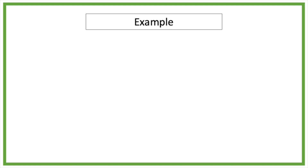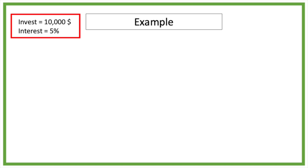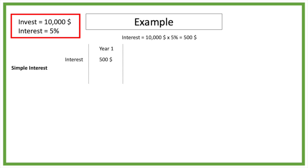Let's say we invest 10,000 dollar in a dividend stock with an interest rate of 5 percent, which means that we will get 5 percent or 500 dollar profit after each year. So when we apply simple interest we get paid 500 dollar interest after year 1, which means a total of 500 dollar profit after 1 year.